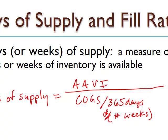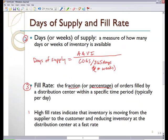The fill rate was our third KPI. The fill rate is nothing more than the fraction or percentage of orders filled by a distribution center, or our intermediate supply points, within a specific time period, which typically is a day. High fill rates indicate that inventory is moving from the supplier to the customer and reducing inventory at our distribution center at a fast rate. For example, 97% might be considered high in most industries, indicating that our inventory is moving from the suppliers to the customers at a really fast rate.